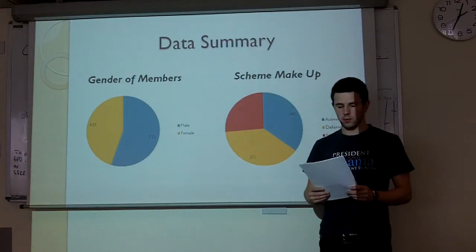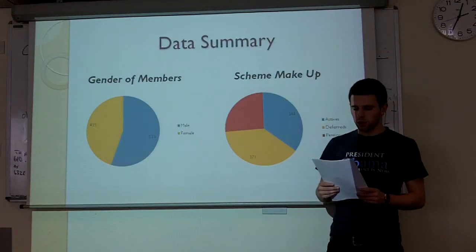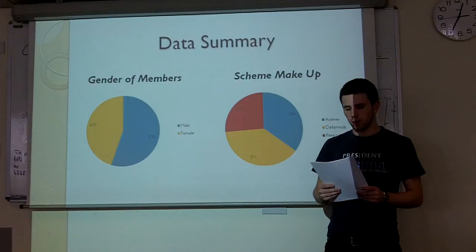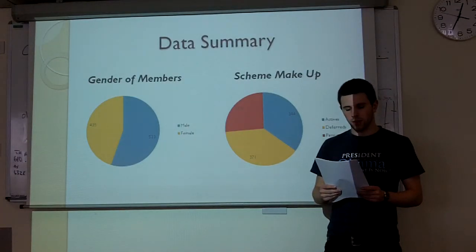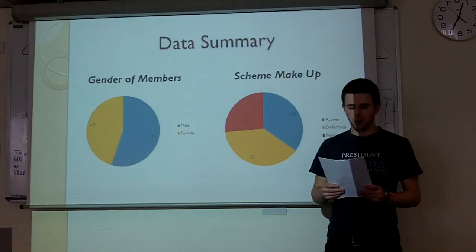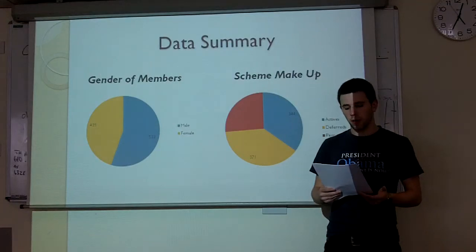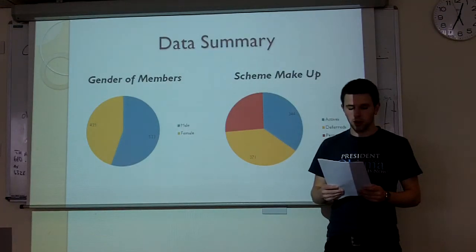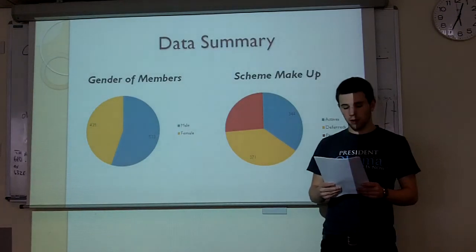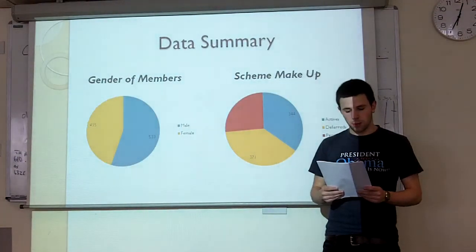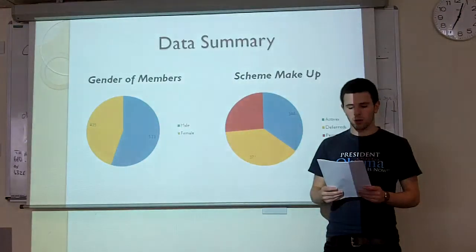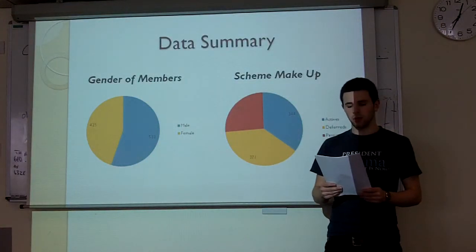We are now going to look at liabilities. The funding level is currently 58.5%, which is alarmingly low for a pension scheme. We are confident in these figures because as well as running our scheme data into the Superbill software, we also performed manual checks using Excel to back up results and check for any computing errors. We intend to bring our funding level back up to 100% by the year 2020. This is an ambitious aim, although we have devised a plan that would result in reaching that goal, which we will now discuss.